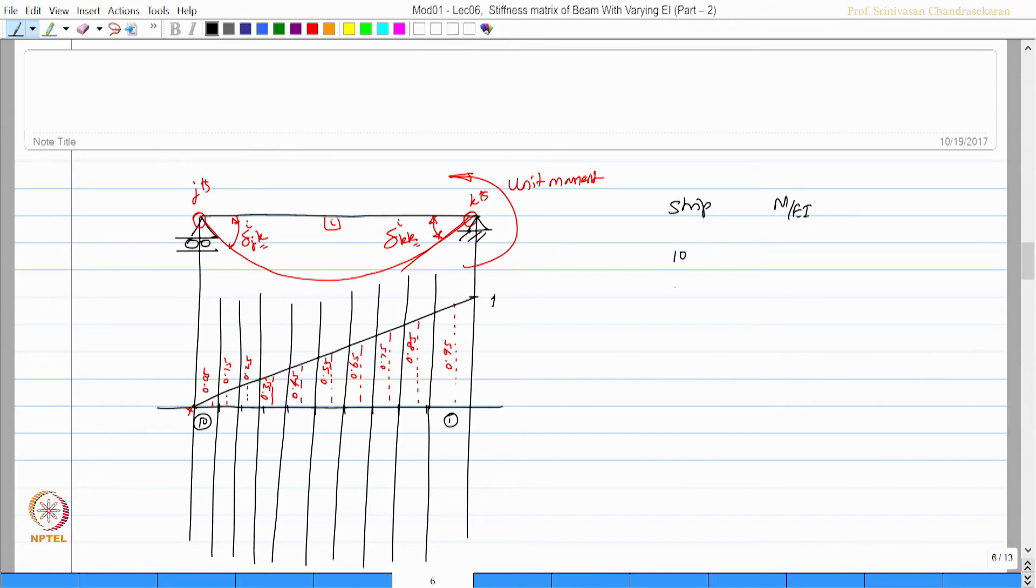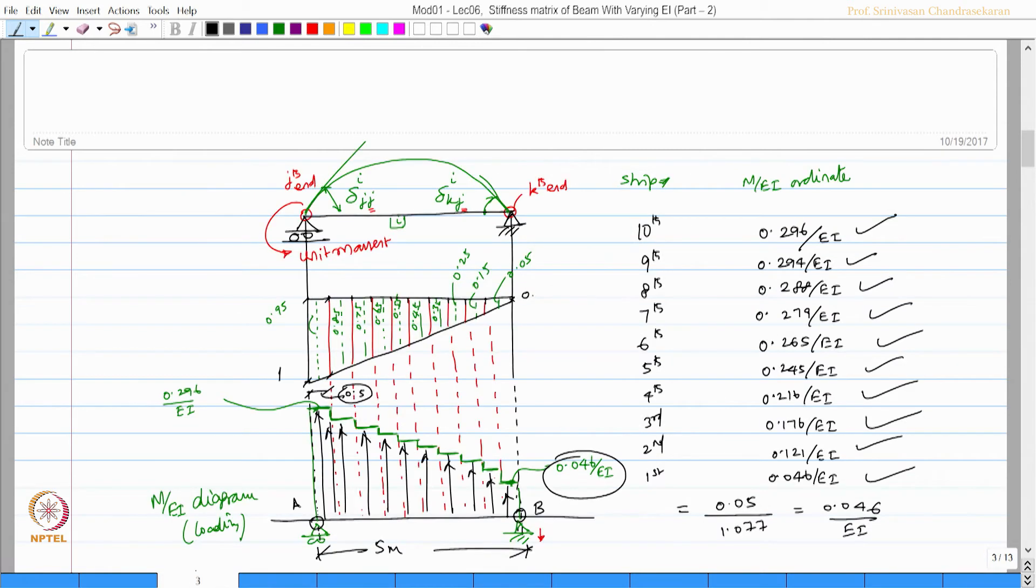Let us do this. So 10, 9, 8, 7th, 6th, 5th, 4th, 3rd, 2nd, and 1st strip - the 10 strips. So let us talk about the first strip. This value will be in the same manner as we have done here.